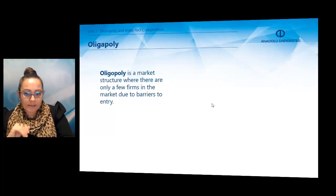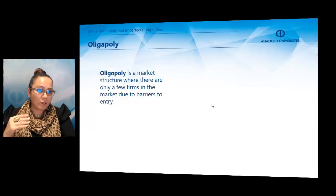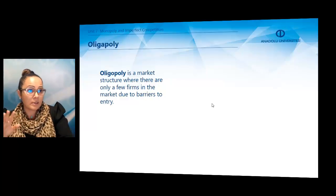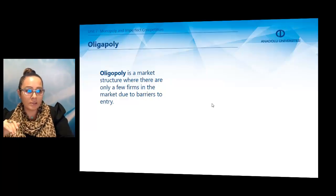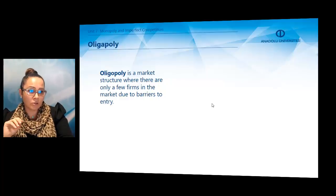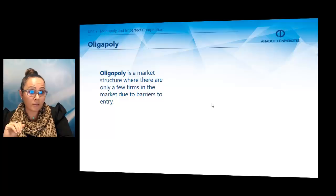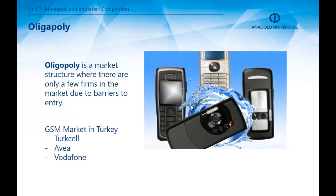When we talk about oligopoly, this is another type of market structure where there are only a few firms in the market due to barriers to entry. For example, the GSM market in Turkey is composed of three firms.